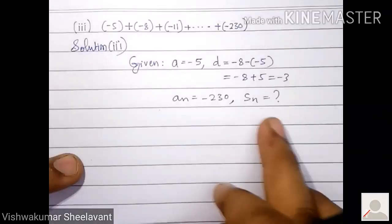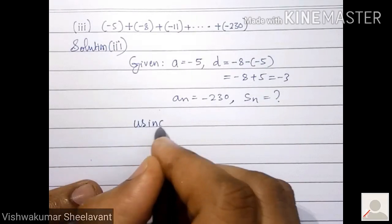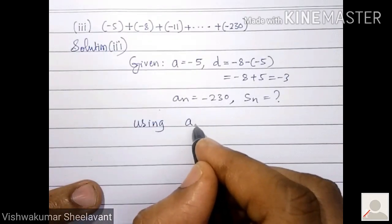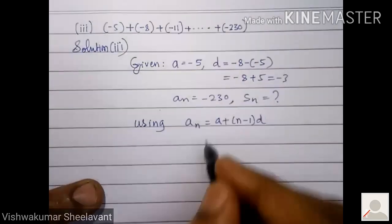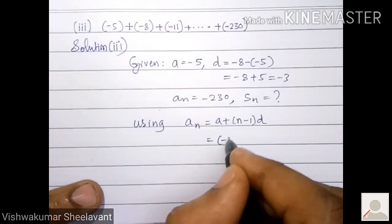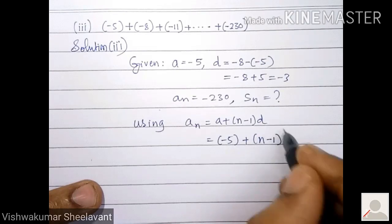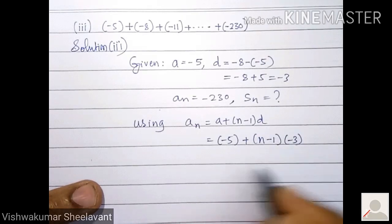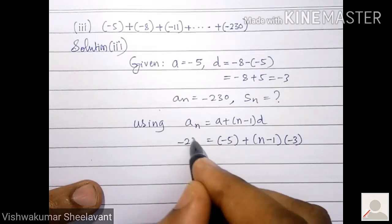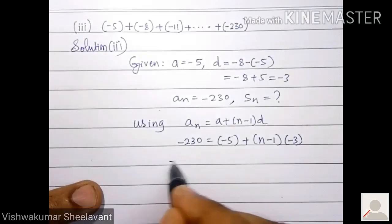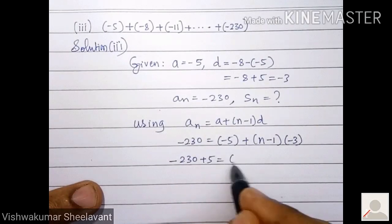To calculate Sₙ we need the value of n, so we have to calculate n using the formula aₙ = a + (n-1)d. Here a is -5, d is -3, and aₙ is -230. Simplifying: -230 + 5 equals (n-1) times -3.